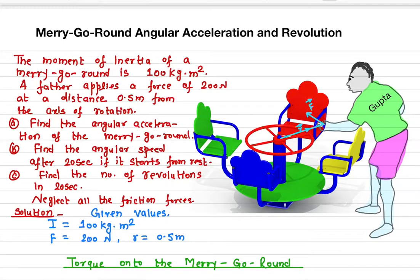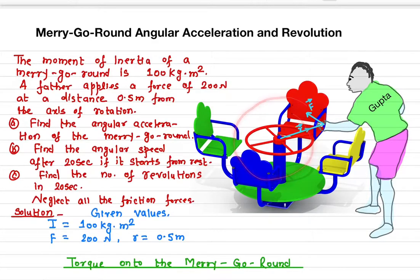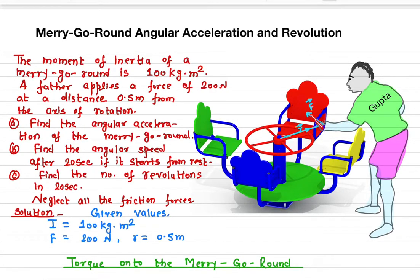In this video I'll talk about how to find the angular acceleration of a merry-go-round, but also the angular speed and the number of revolutions. So let's start with this one.